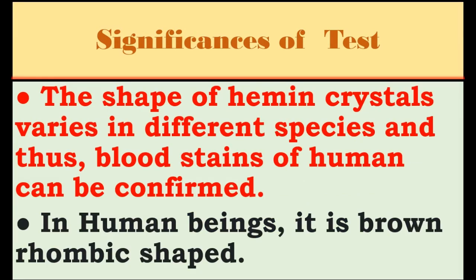The shape of the Hemin crystal varies in different species, and thus blood stains of human can be confirmed. In human beings, the crystal is a brown rhombic shape.